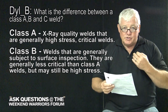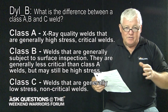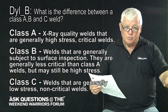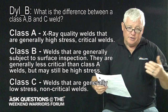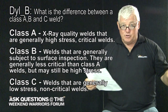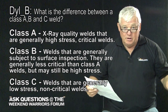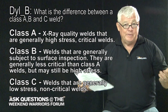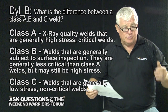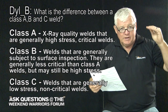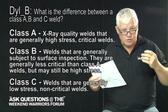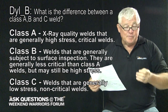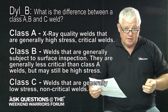When you go to a Class C, these are low-stress welds, and you're going to find maybe a visual inspection, a mag particle, or just a penetrant inspection. So just know it's about the quality, stress level of the weld, and the inspection criteria.